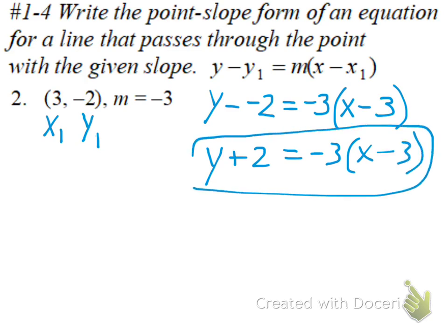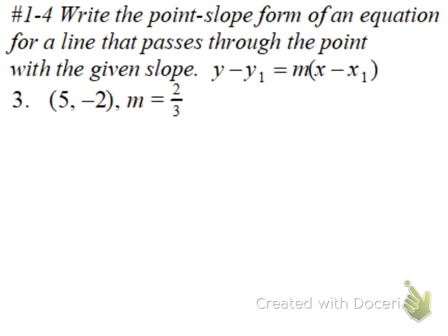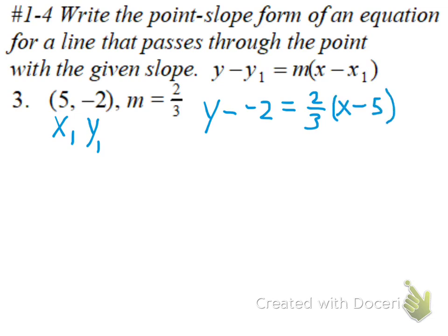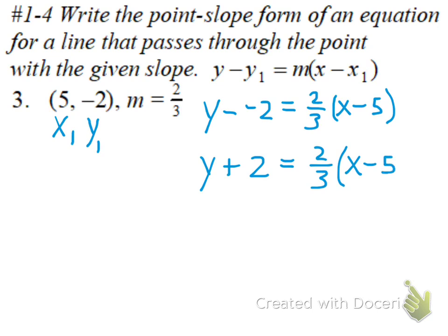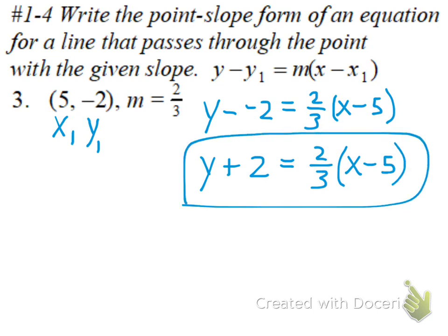Really important to read the directions on these — still writing in point-slope form. So we'll label our points x-sub-1, y-sub-1. Our slope is m. Y minus y-sub-1, which is negative 2, equals m, which is 2/3, times x minus 5. Minus a negative, we'll rewrite as plus a positive. That should be y plus 2 equals 2/3 times, in parentheses, x minus 5. Again, that's point-slope form.